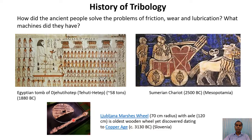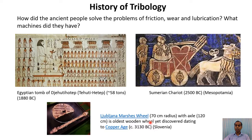The oldest wheel and axle was found in the Juvjana Marshes in Slovenia. This wooden wheel was carbon dated to around 3130 BC — much earlier than the Sumerians started using chariots. However, it was found as two separate pieces, not integrated as a wheel and axle system, so we do not know exactly how it was used.